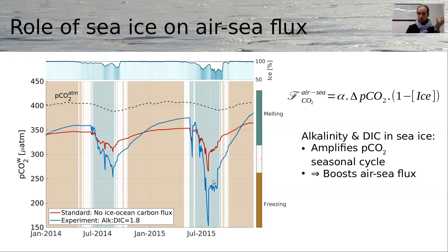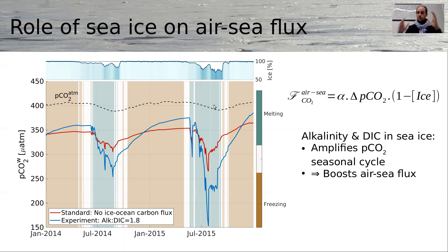On the contrary, in summer, when the pCO₂ is lower than in the standard run, that's also when the ice is broken and we have an interface between the ocean and the atmosphere — that's when uptake is possible. So the net impact of parameterizing the carbon storage in sea ice over a single cycle is that it increases the oceanic CO₂ uptake.